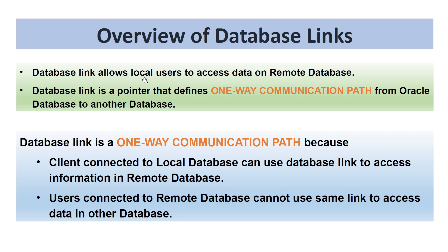A database link allows local users to access data on a remote database. It is a pointer that defines a one-way communication path from one Oracle database to another. Users connected to the local database can use a database link to access information in the remote database, but users connected to the remote database cannot use the same link to access data in the other database.